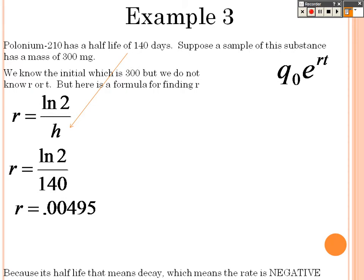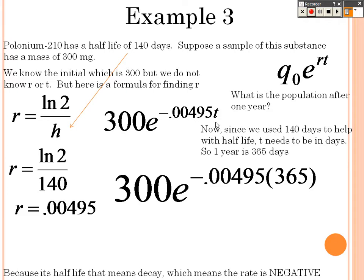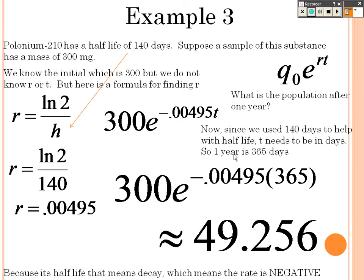Because it's half-life, that means decay, which means the rate is going to be negative. It's going down. So make sure you put a negative in there because it's half-life and it's going down. So it's negative 0.00495, and we started at 300. After one year, you just put a 1 in there, but we're talking about T in terms of days. Since this half-life is 140 days, that's why we use T as 365 instead. To keep everything the same, that's why I put 365 in there for days, to make it all the same. And it would be about 49.256.